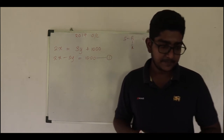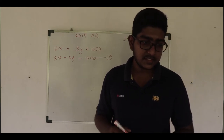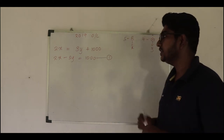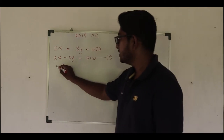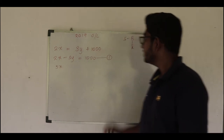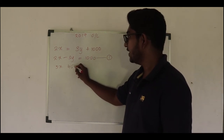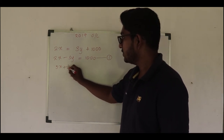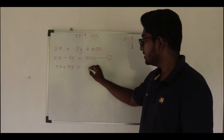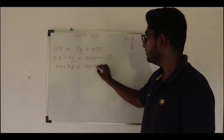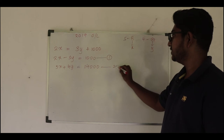For the second data: the cost of the costumes of all the children in the group was fourteen thousand rupees. We had five boys, that is 5x, and four girls, that is 4y. So the second equation is 5x plus 4y equals 14,000.